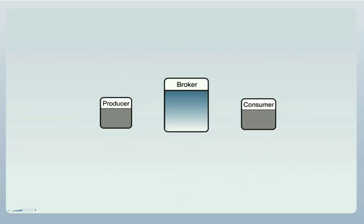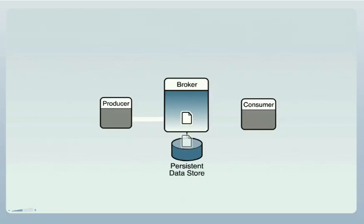Here's how it works. A Message Producer application connects up to the broker through a connection service provided by the broker. The producer sends a message to a destination on the broker, and the broker holds the message in memory, pending its delivery to an intended consumer. The broker also stores the message in its persistent data store. When a Message Consumer application becomes available by connecting to the broker, the broker delivers a message to that consumer.